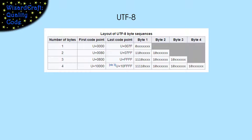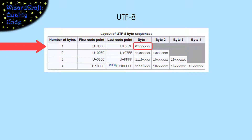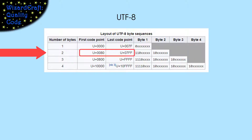If you look at this table, the values between 0 and 7F, which is 127, get encoded in one byte. The values between 80 in hex and 7FF get encoded in two bytes, where the first byte starts with 110 and the second byte starts with 10.